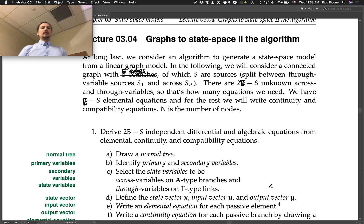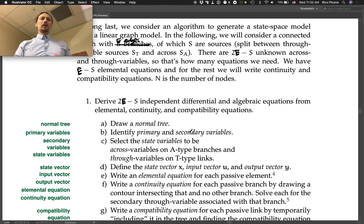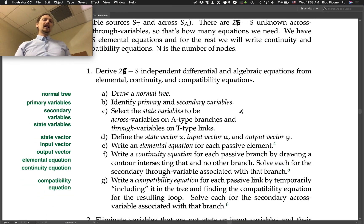So Part 1 is to derive 2e minus s independent differential and algebraic equations from elemental, continuity, and compatibility equations. That's the broad goal of Part 1 here and it's got several steps.